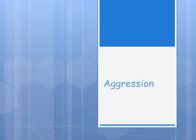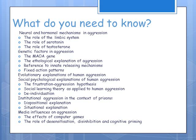This is for Paper 3, the section on aggression. In this section you will have more than one topic to select from, and you are selecting the aggression topic. You need to know: neural and hormonal mechanisms of aggression, genetic factors, evolutionary and ethological explanations, social psychological explanations, institutional aggression, and how the media can impact on aggression.